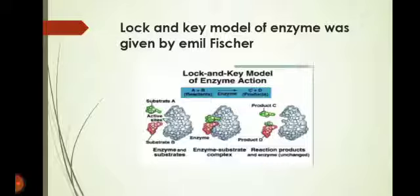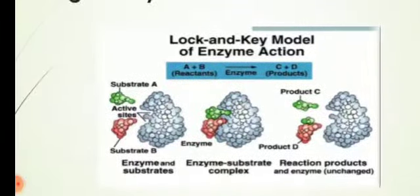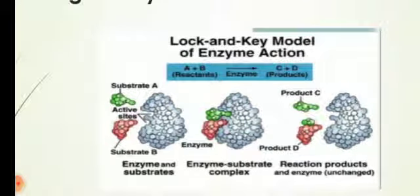If we talk about the lock and key model of the enzyme: the lock and key model was proposed by Emil Fischer. He stated that a specific key opens a specific lock — similarly, the substrate is the key and the enzyme is the lock. A specific substrate whose shape resembles the active site can fit into it and open it, like a lock and key model.